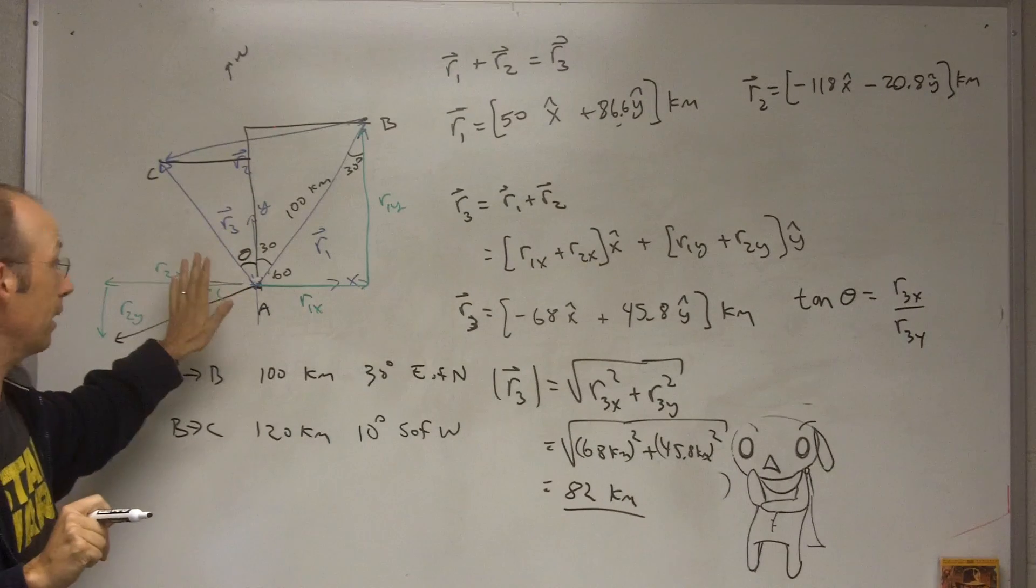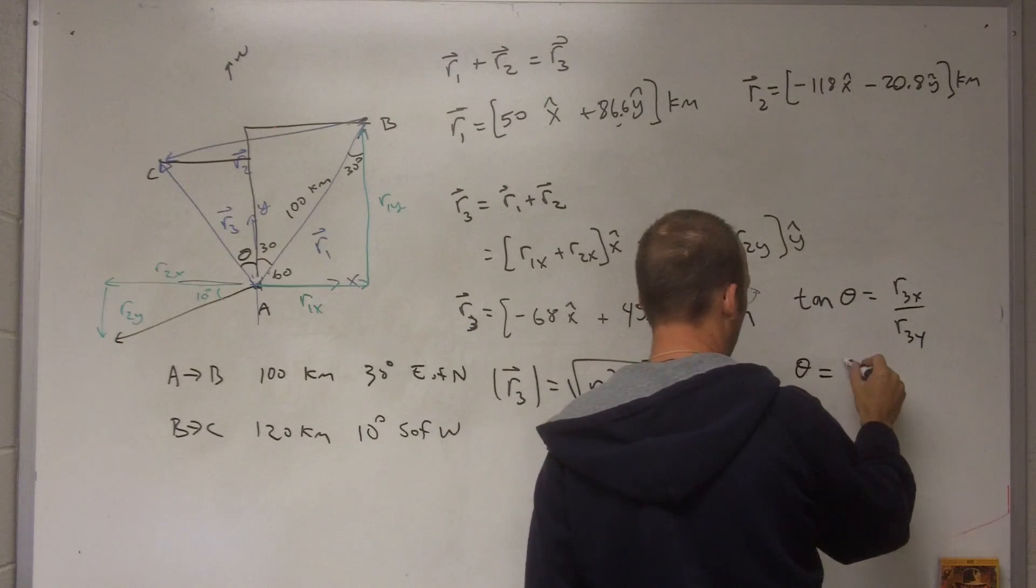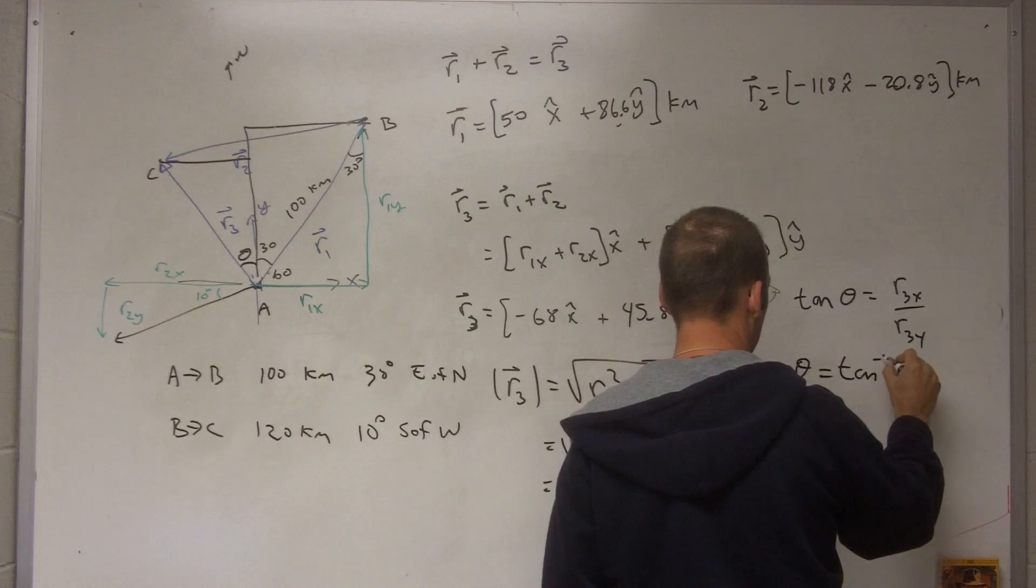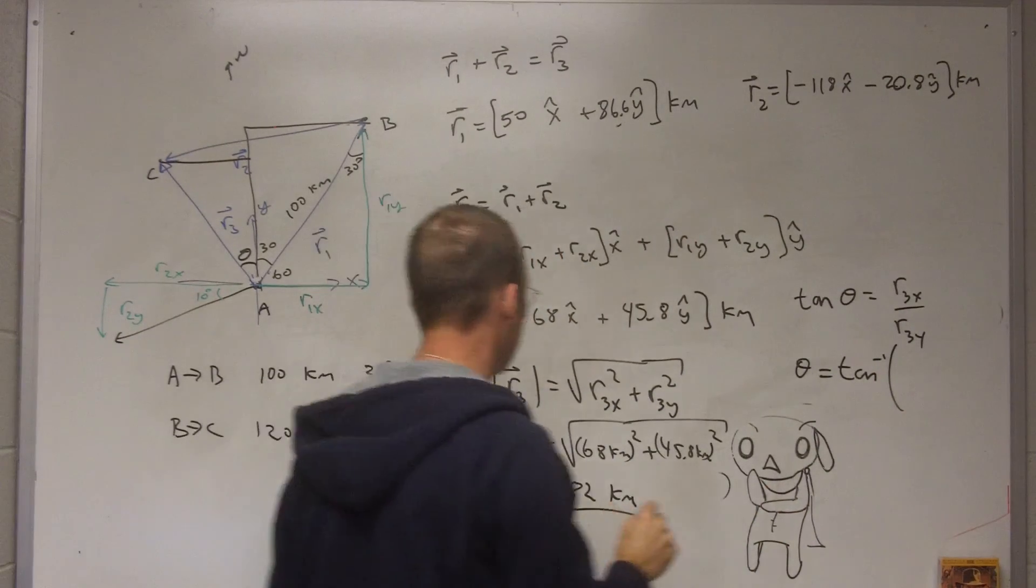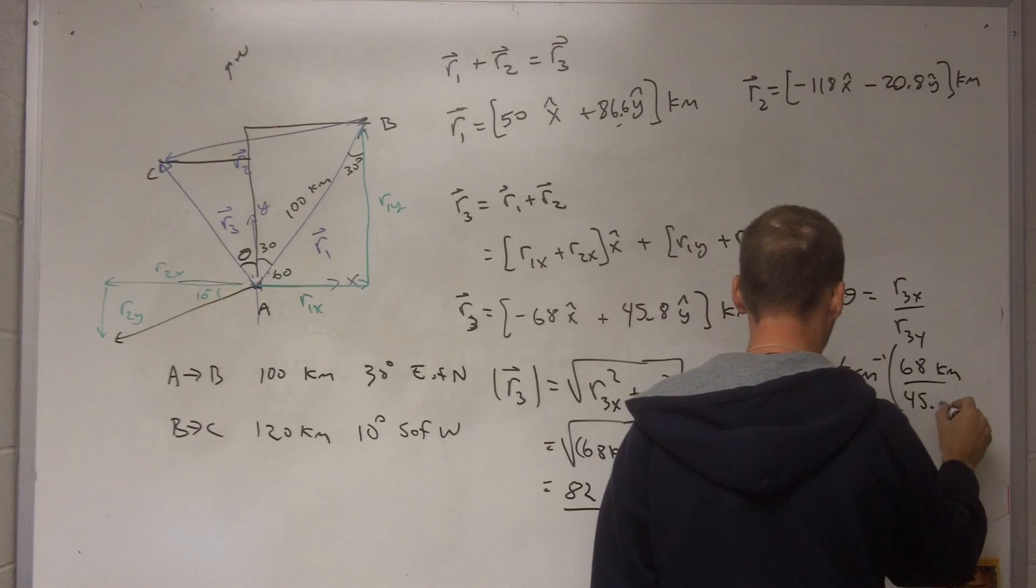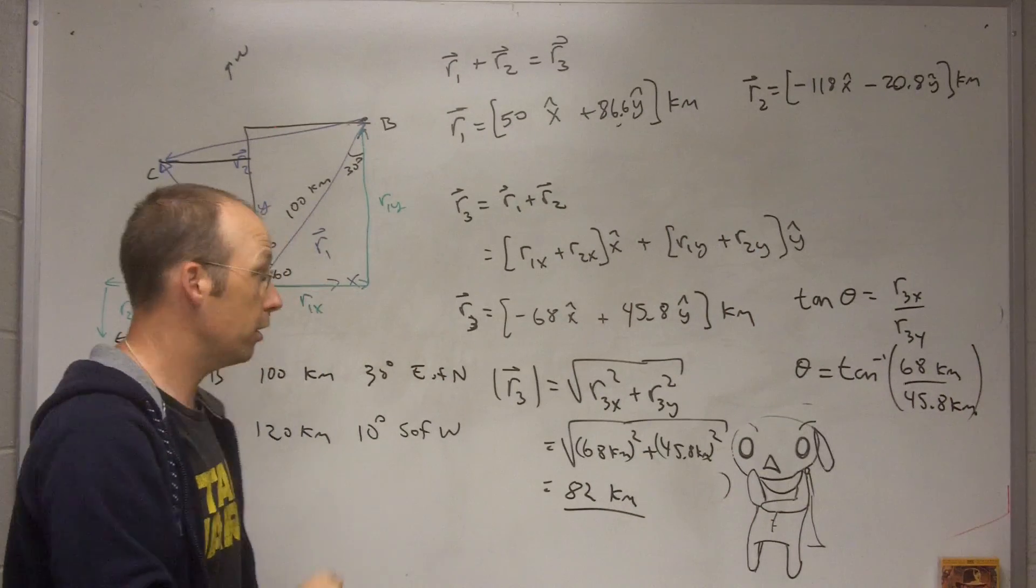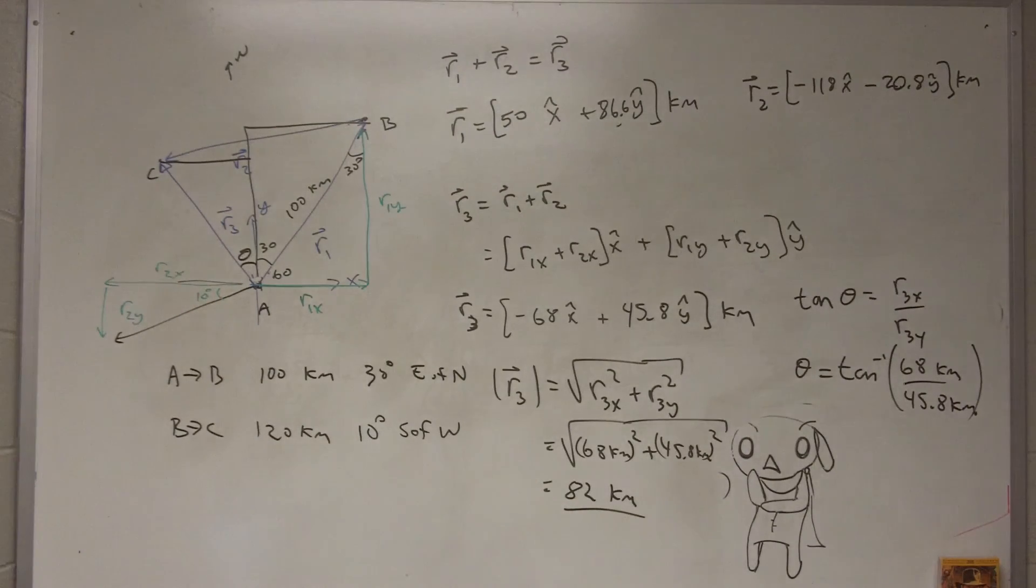Now, the way I've drawn my triangle, these are positive values. I've already taken into account the negativeness of the x component by the way I drew my angle. So I don't need to put in negative values there. So to find theta, I would just take the inverse tangent of r3x over r3y. So that would be 68 kilometers over 45.8 kilometers. And the units cancel, which is important because you can't take the inverse tangent of anything with units. So let's see. I said it was 68 divided by 45.8, and I get 56 degrees.